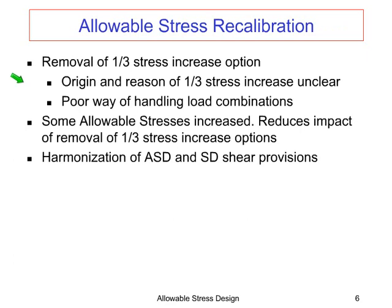We did remove the one-third stress increase option. The reason for the one-third stress was unclear — some thought it was a time-based loading or duration of loading thing, which really does not affect masonry. Some felt it was for load combinations, but it's really a poor way of handling that. As a result of removing it, we did increase some of the allowables and did a major review of all the allowable stresses. We also harmonized the allowable stress design and the strength design shear provisions.